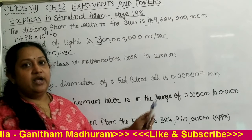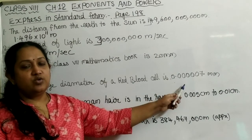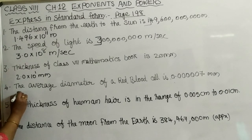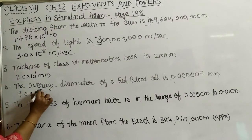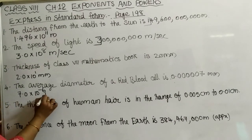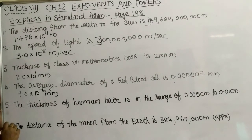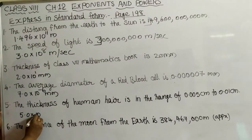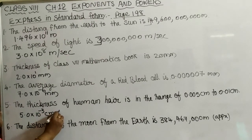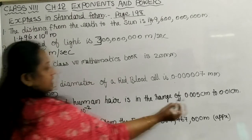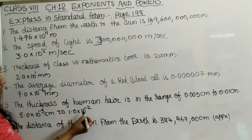For the decimal number case, we write 10 to the power minus. There are 6 digits after the decimal point, so we write 7.0 into 10 raised to minus 6 mm. The thickness of human hair is in the range of 0.005 cm to 0.01 cm, which can be written as 5.0 into 10 raised to minus 3 centimeters to 1.0 into 10 raised to minus 2 centimeters.